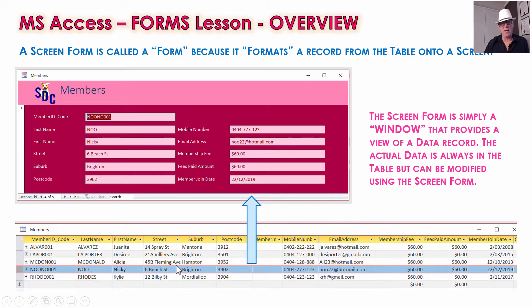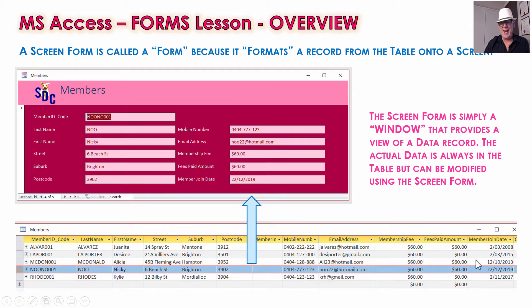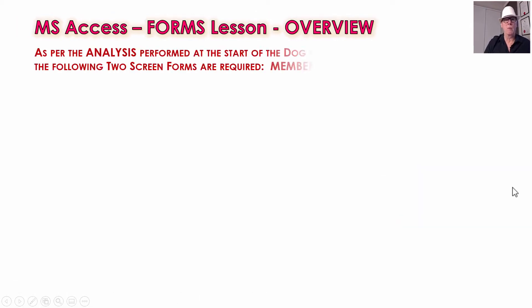The data always lives in the table. A lot of people get confused — they think they've got data in the screen form and data in the table, but it's actually all the one data. The screen form is just a window. Here's that row for Nikki Nu from the table, but it's a lot easier to read on this form and find things. Screen forms make it easy, but the information isn't stored in here — it's always stored in the table. But you can change things on here: if Nikki Nu changes her mobile phone number, you put the change in here, click save, and it saves the new value into the database.